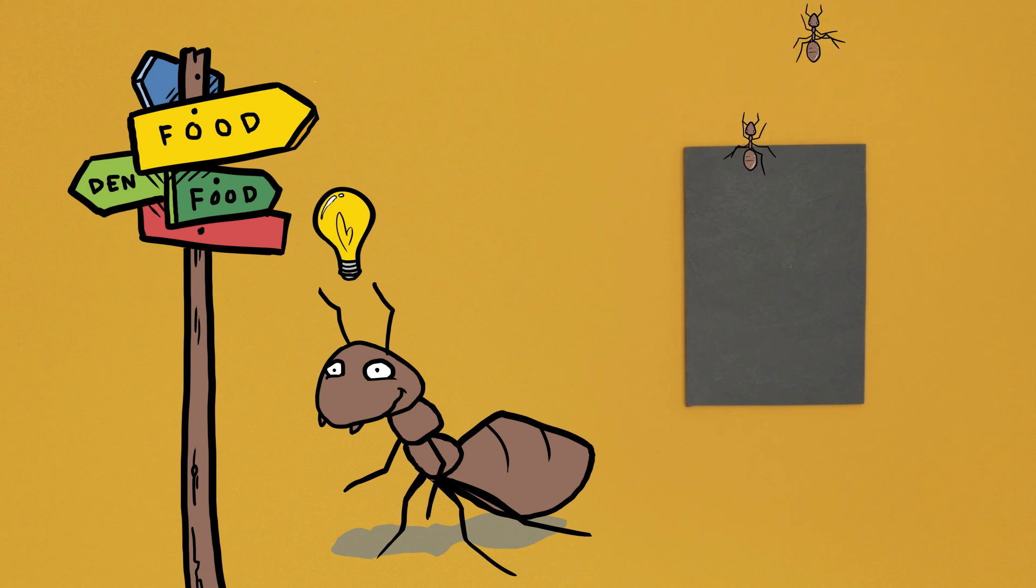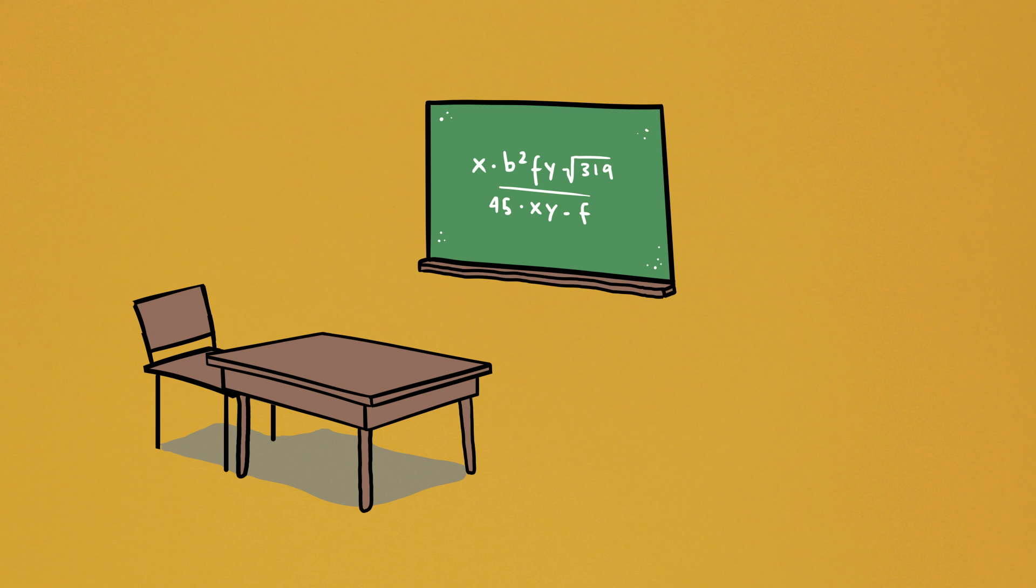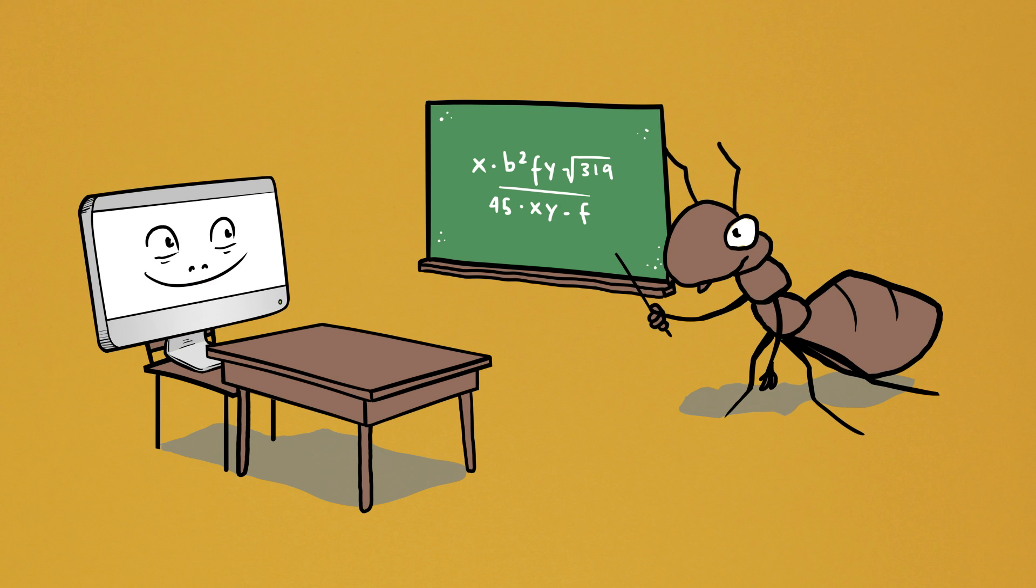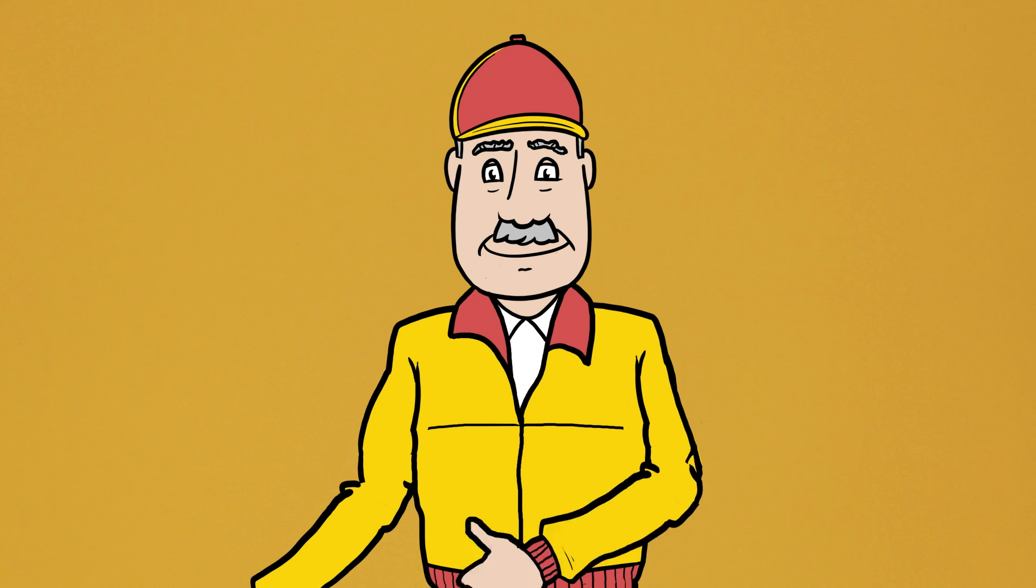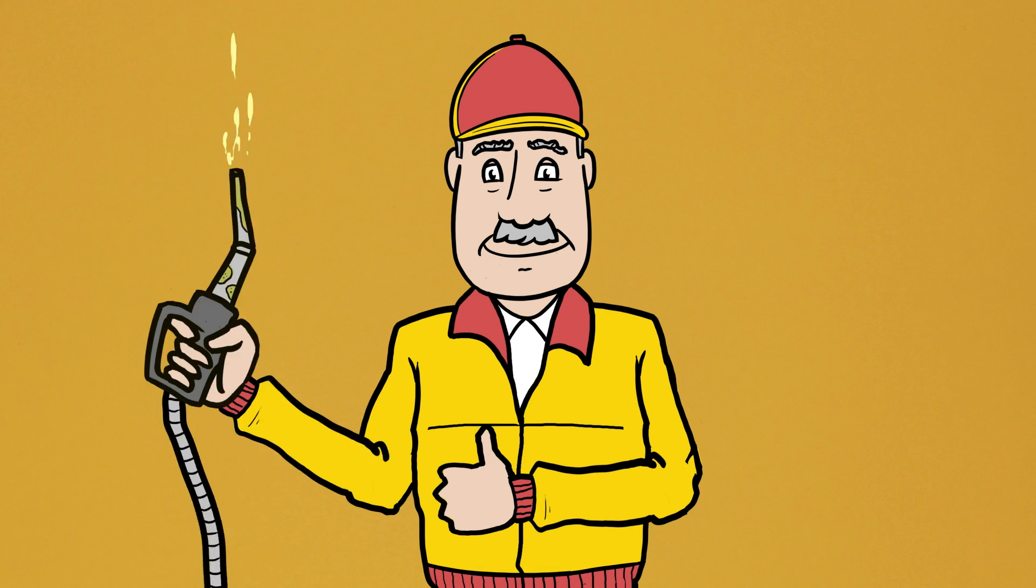With the Ant Colony Optimization Algorithm, the computer learns how to think like an ant colony and can calculate the fastest route much quicker. This helps the parcel delivery service to save on both time and fuel.